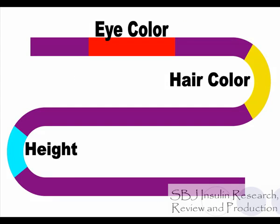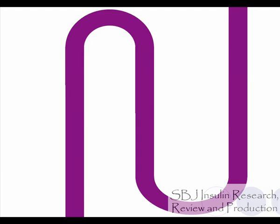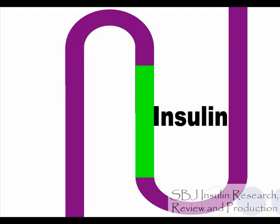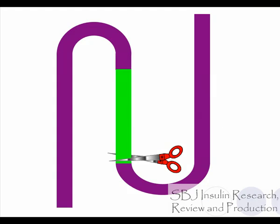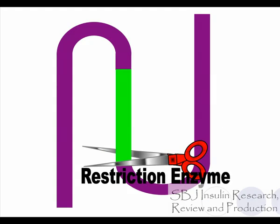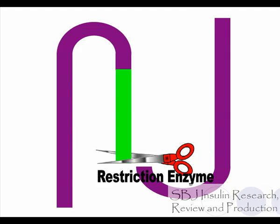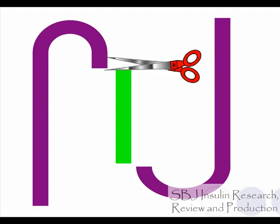An organism is genetically modified when its genes have been changed. There is also a gene in your DNA that makes insulin. Insulin is what Prem needs. So, to get this gene, we use restriction enzymes to cut it out. Restriction enzymes are like scissors — they cut your DNA at certain sections.